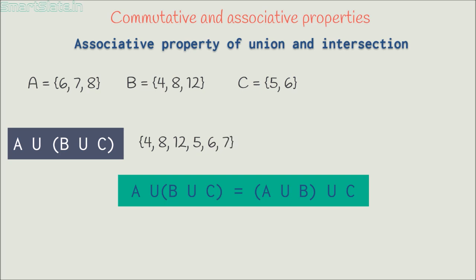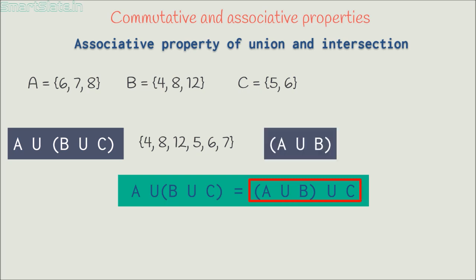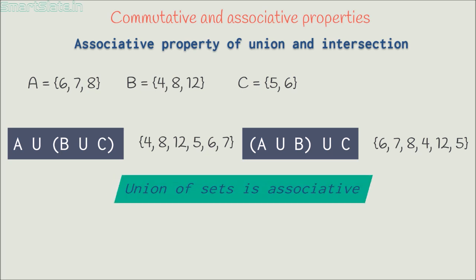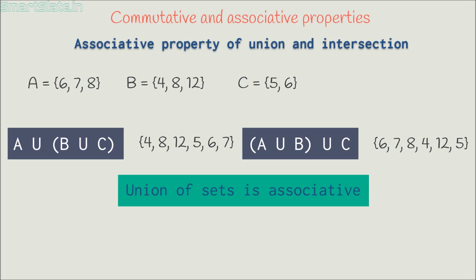Now let's calculate (A union B) union C. A union B is 6, 7, 8, 4 and 12. Union of this set and C is 6, 7, 8, 4, 12 and 5. If you observe both of these sets, the elements are the same and hence both sets are equal. Hence the union of sets is associative.